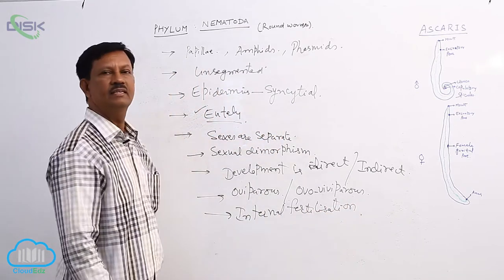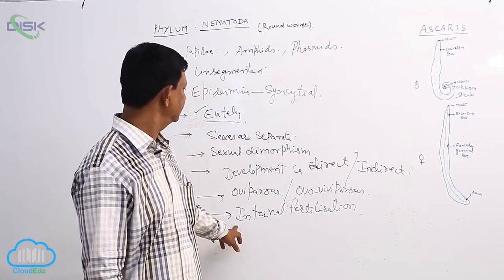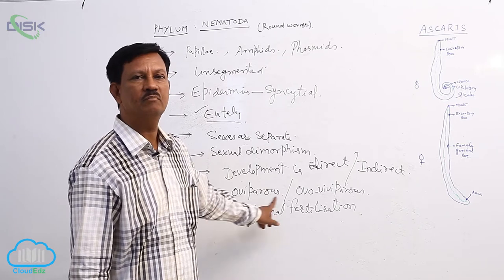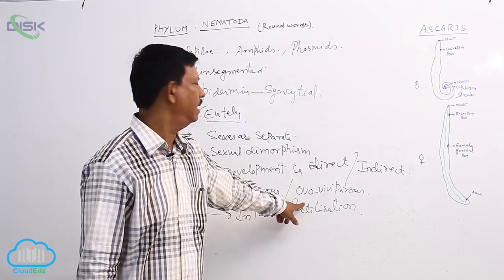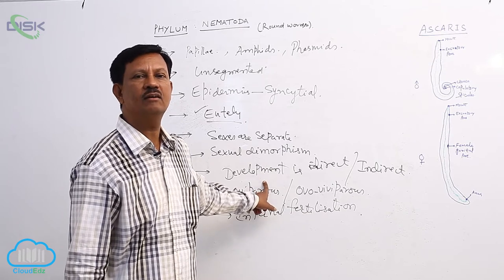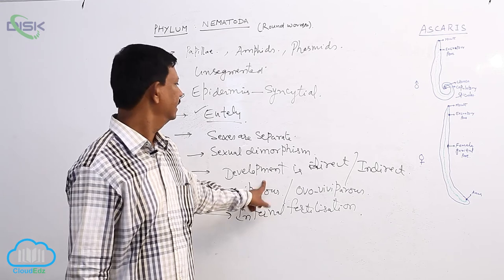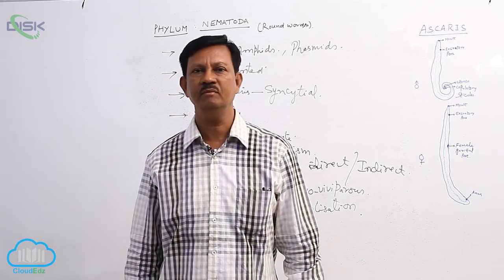Internal fertilization - the union of the male and female gametes takes place inside the body. That is known as internal fertilization. Oviparous animals. Development is direct or indirect. Usually there are four moltings that take place in the body, then it becomes into adults. These are the main characters of the phylum Nematoda.